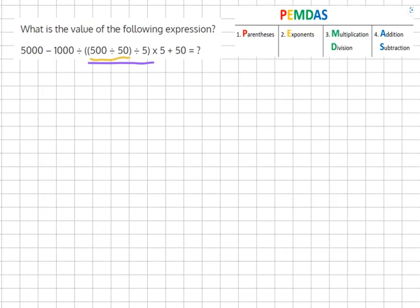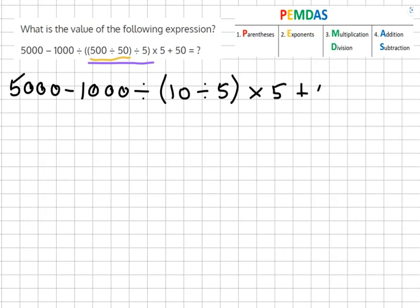So we always start with the inner ones. So the equation becomes 5,000 minus 1,000 divided by 500 divided by 50 equals 10 divided by 5 times 5 plus 50 equals.